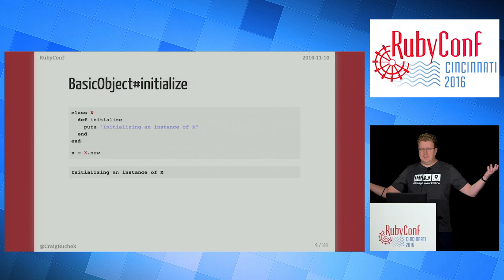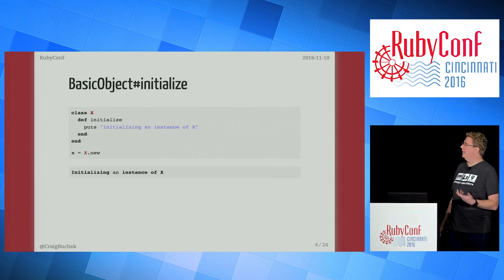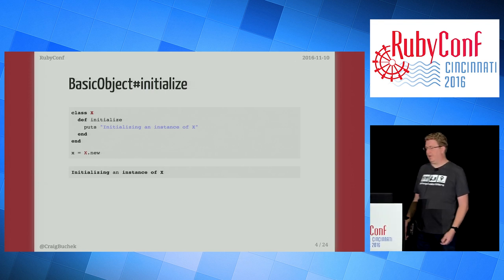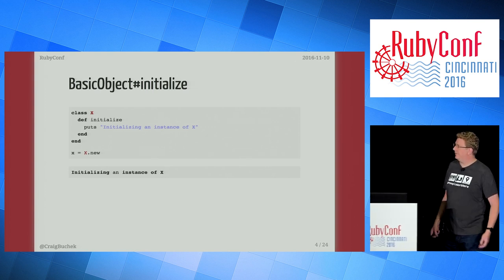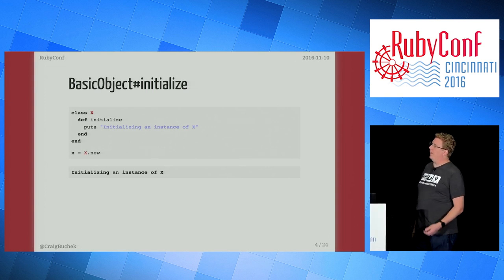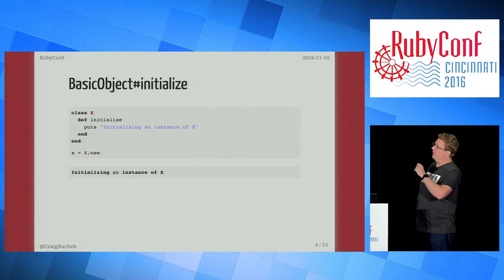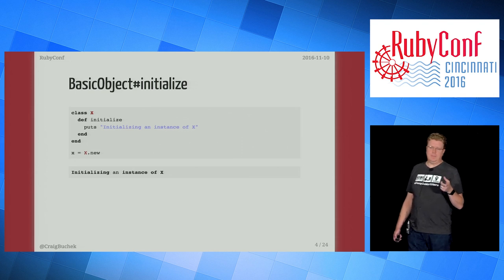Who here has used initialize? Probably everyone. Notice that we never explicitly call initialize here, but it gets called anyway — so that's a hook. This is obviously the most commonly used hook in Ruby, but it does meet the definition. Initialize is defined on BasicObject. I've got initialize there, and BasicObject with a hash sign, which indicates it can be found on the BasicObject class if you're looking up documentation.